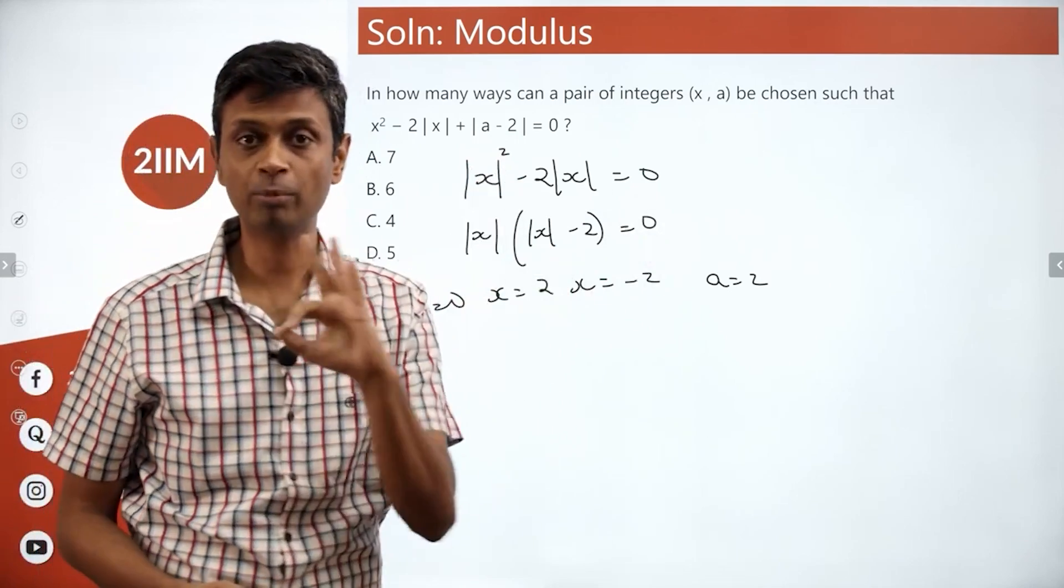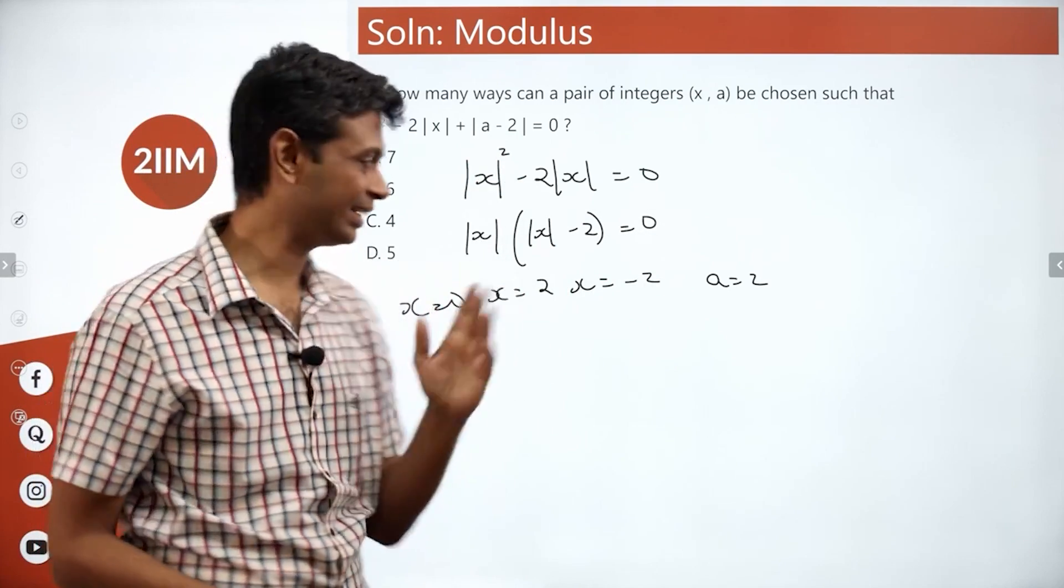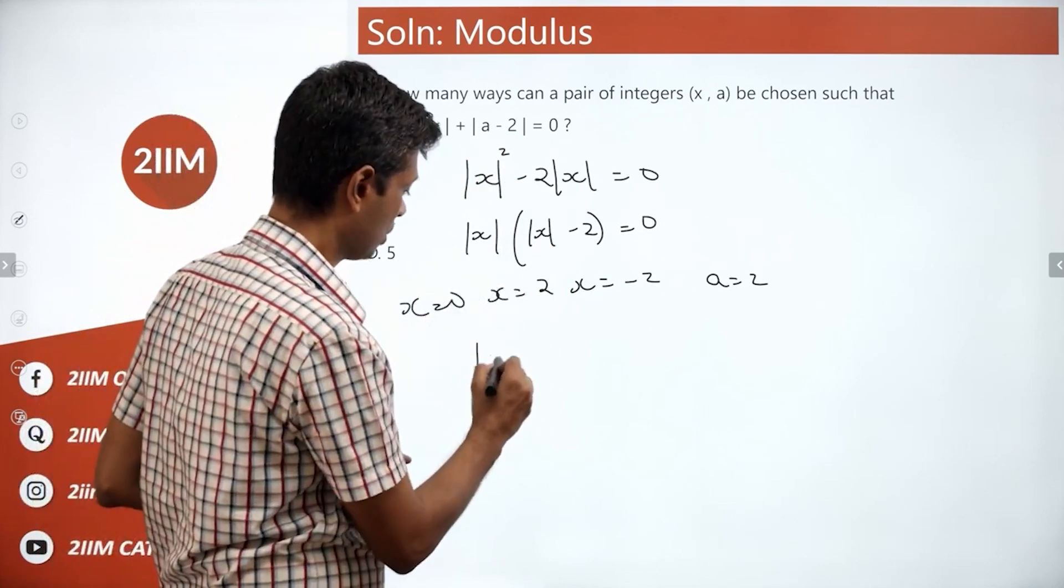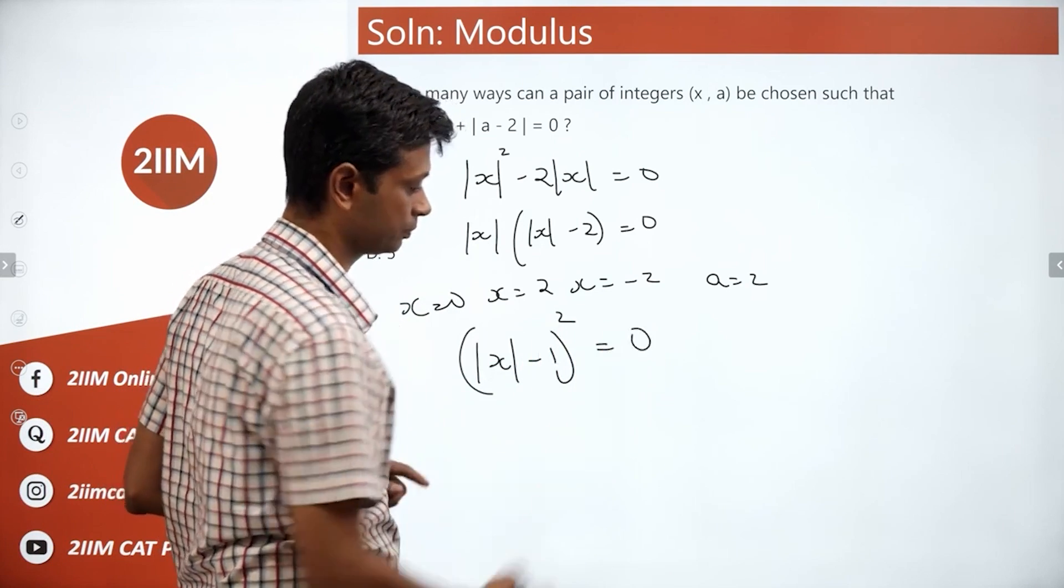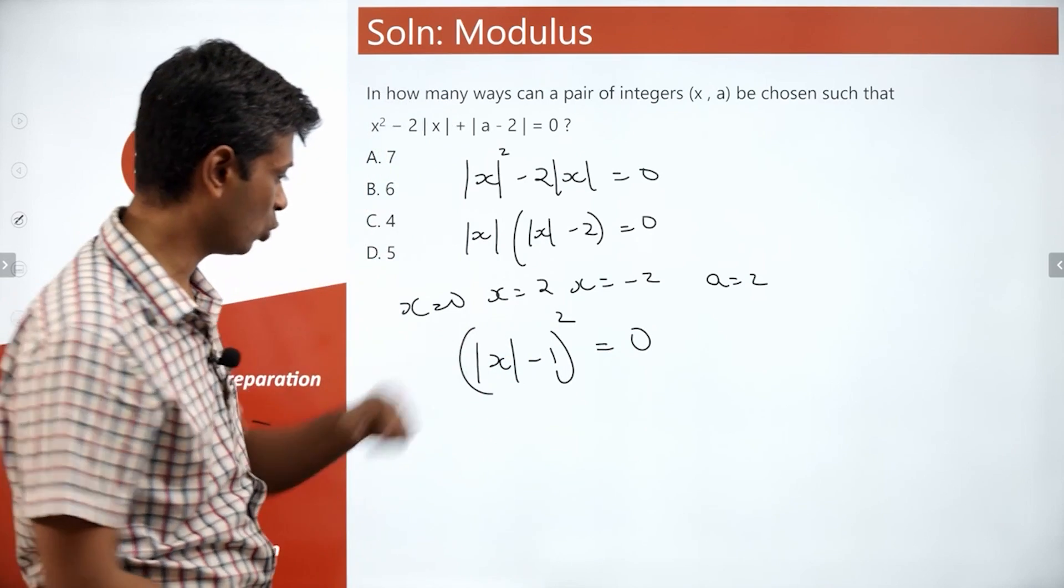So there are three possible solutions here: x and a are (0, 2), (2, 2), (-2, 2). Three possibilities work. Now let's go to the other scenario where mod x minus 1 whole square is equal to 0.